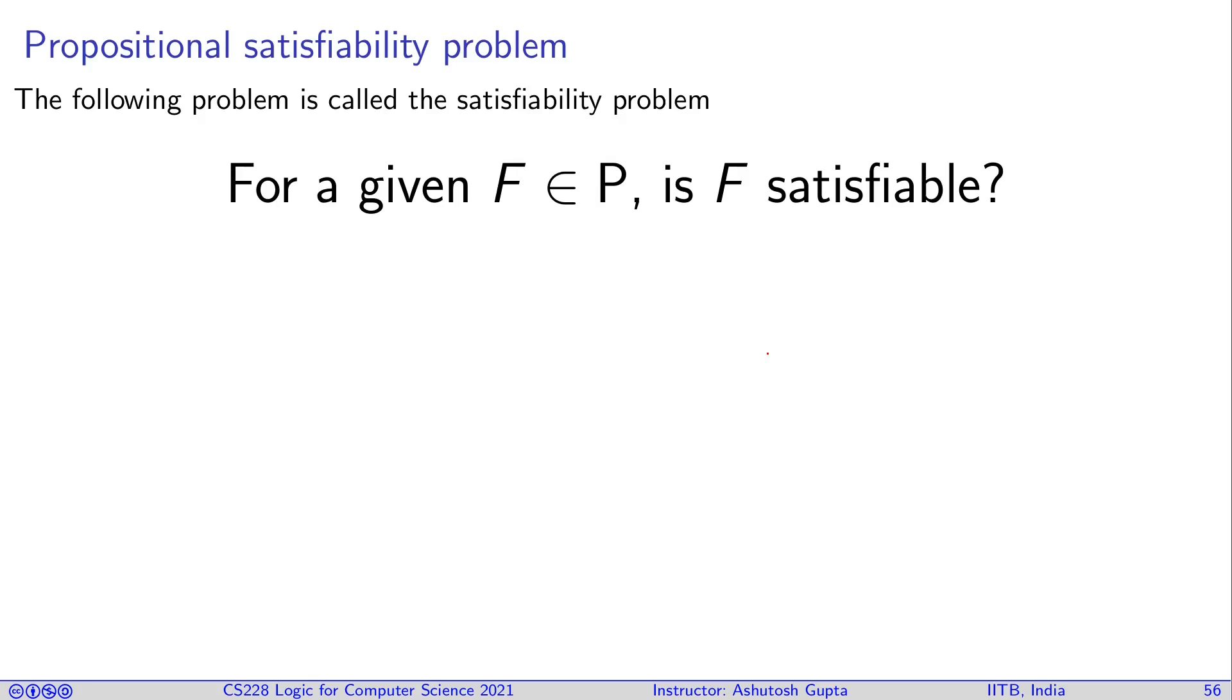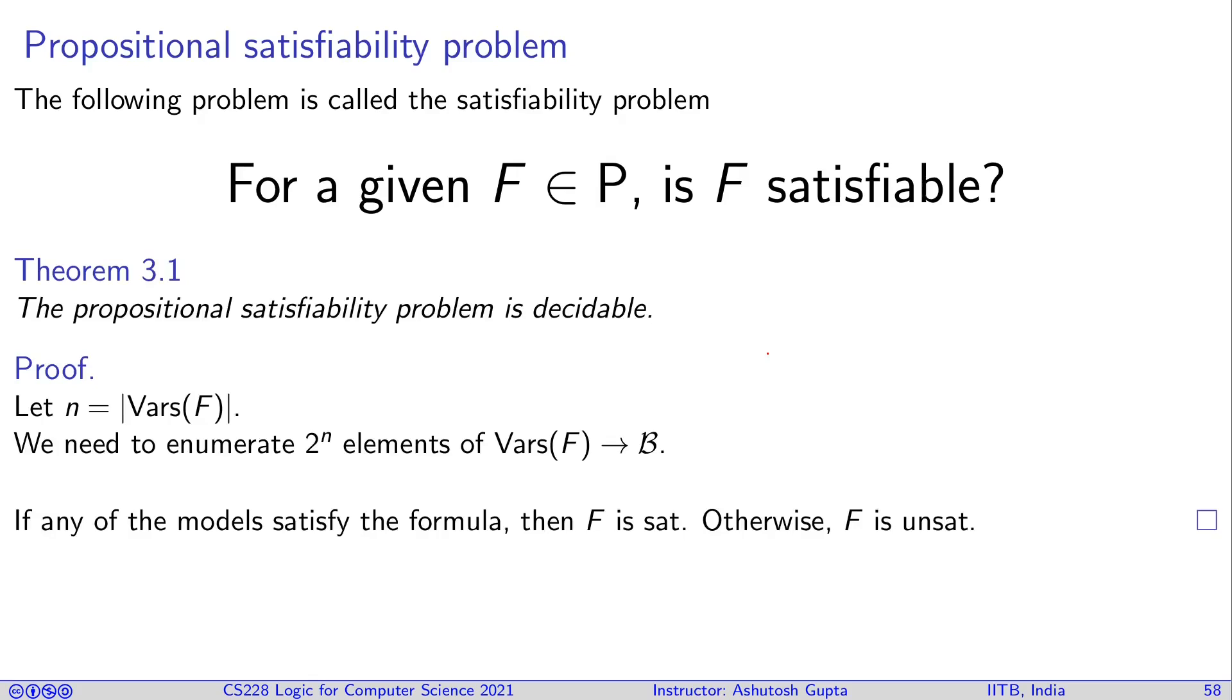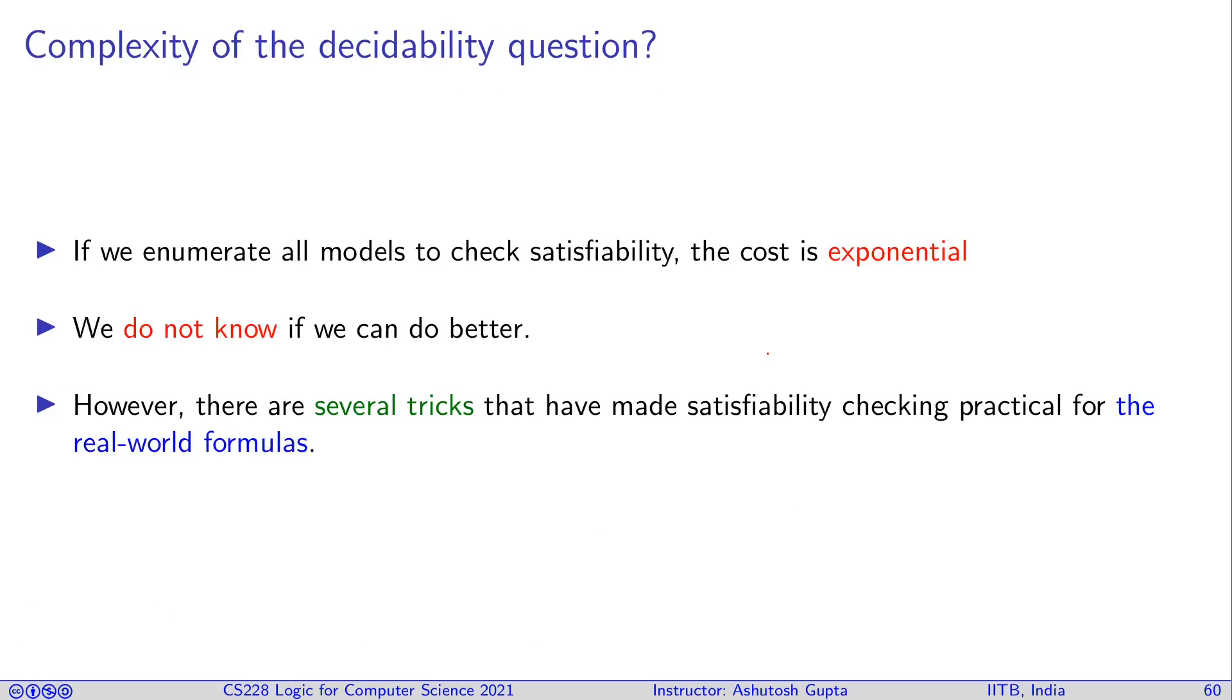The question is, is there a model that satisfies this formula? Or in other words, is F satisfiable? This problem is decidable. How do we decide this? It's fairly simple to see, since each of these strings that you can call a formula must have a finite number of symbols. Therefore, you can enumerate all possible boolean assignments to these symbols, and you can in exponential time find the satisfying assignment that satisfies the formula, or if none of them satisfies, then you say the formula is unsatisfiable.